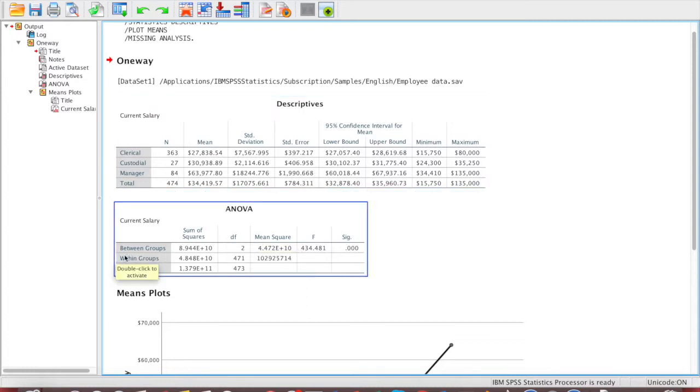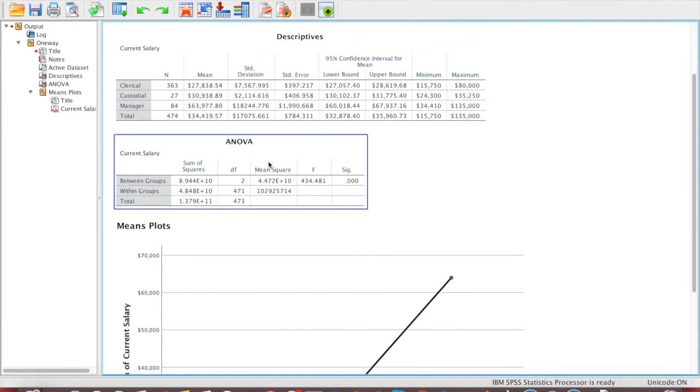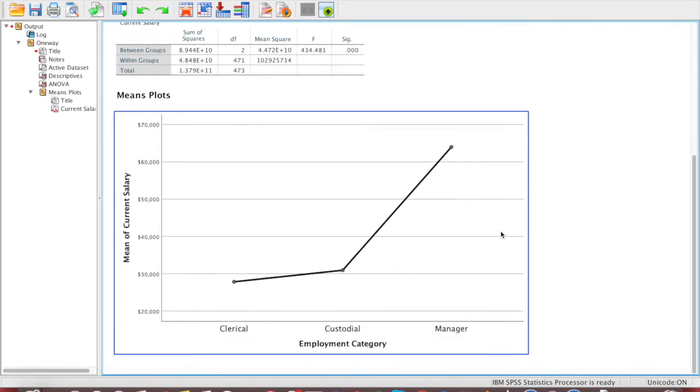And then the next one is the ANOVA table. It is between groups and within groups. And it shows sum of squares and mean square and F tests. And then when we go down, we have the mean plot. It's a visual representation of what we saw for comparing means here. And the points on the charts are the average of each group.